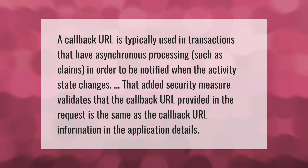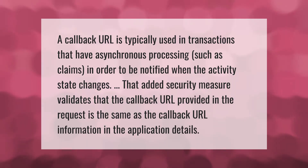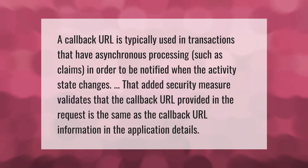A callback URL is typically used in transactions that have asynchronous processing, such as claims, in order to be notified when the activity state changes. That added security measure validates that the callback URL provided in the request is the same as the callback URL information in the application details.